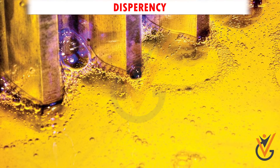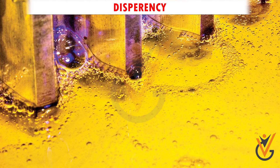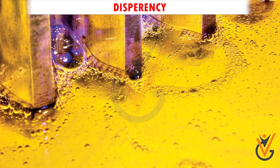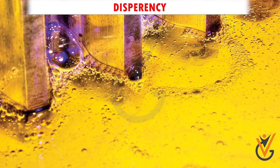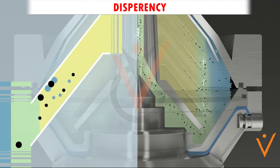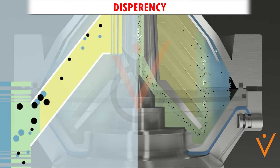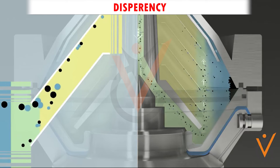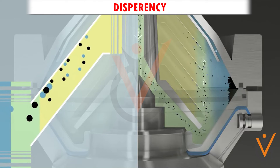Dispersancy. It is the property of the lube oil which prevents impurities from mixing with itself and keeps them suspended on the surface. This makes it easy for the separator or clarifier to remove them from the oil.